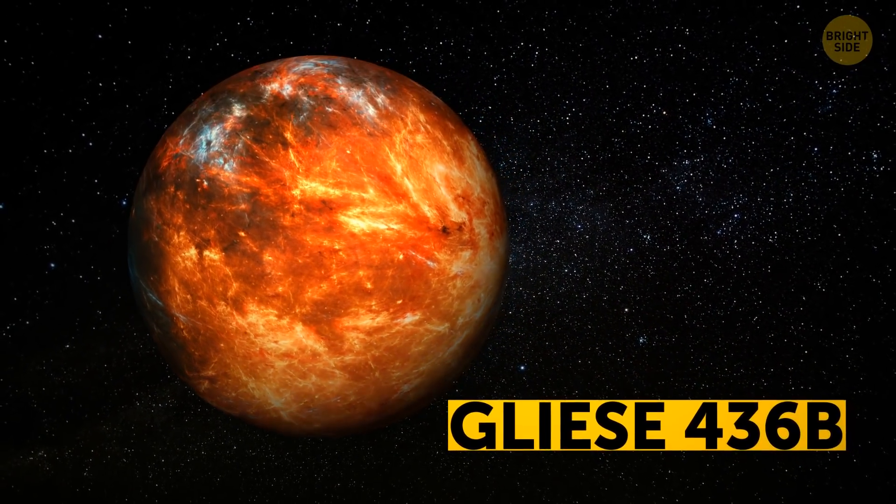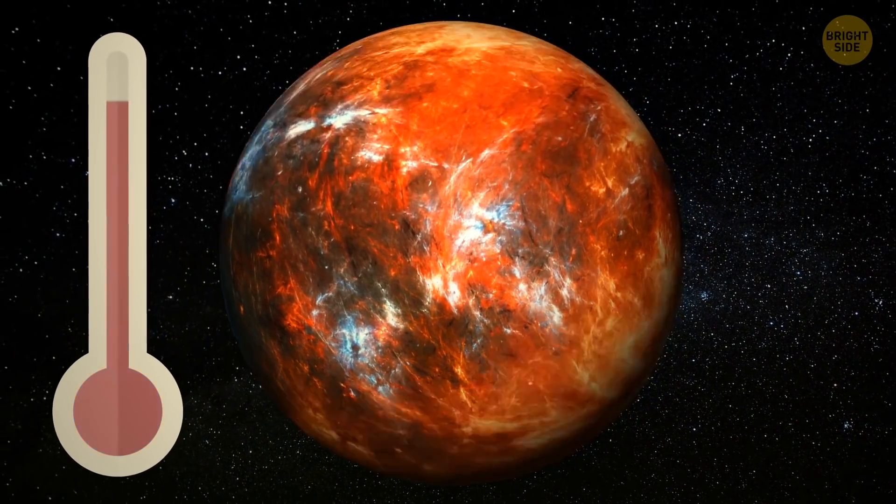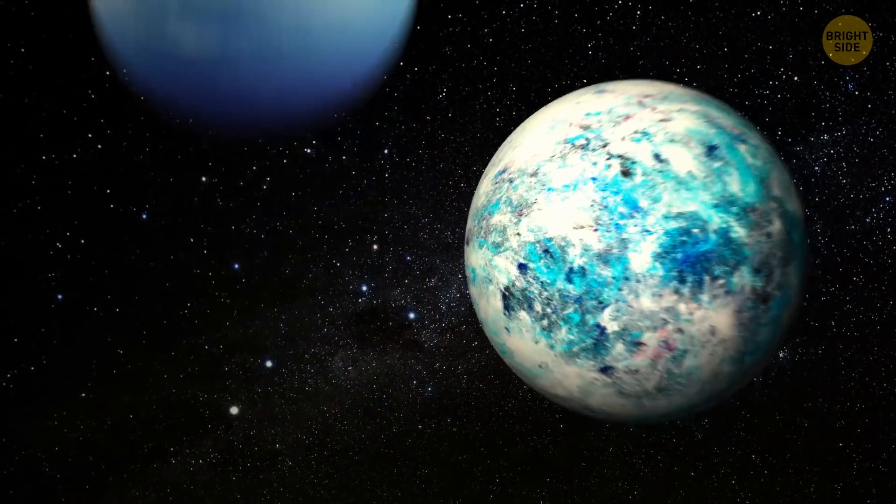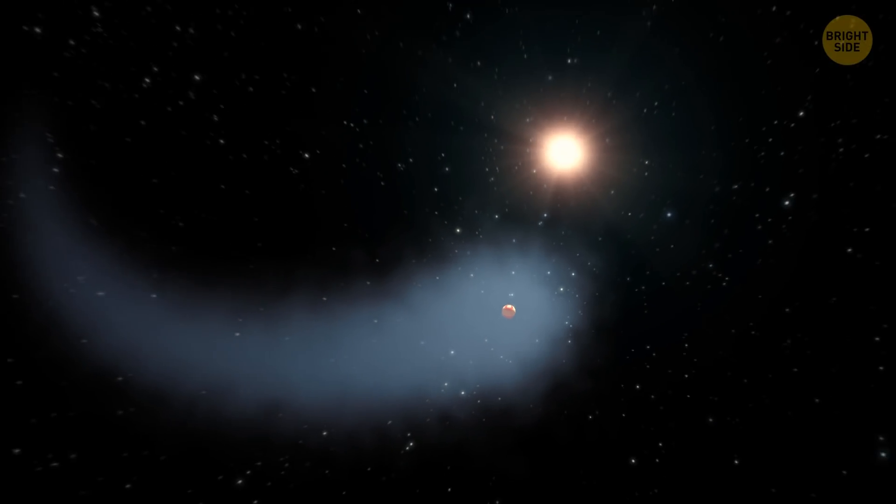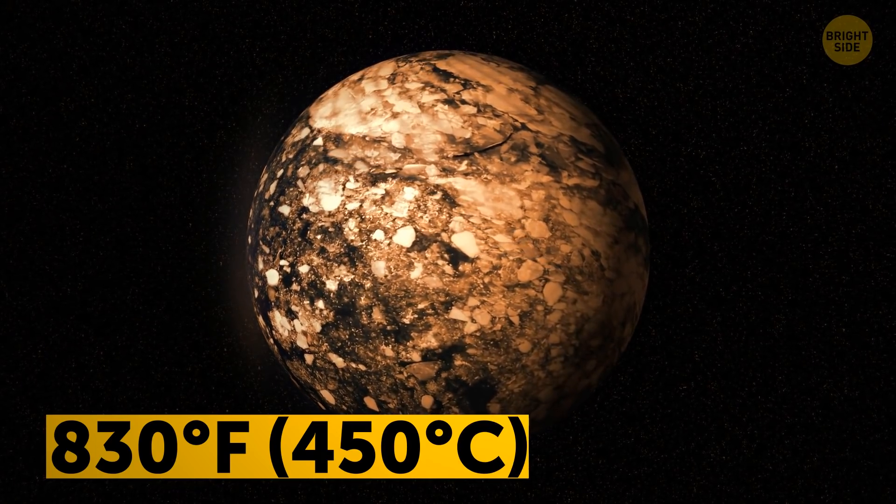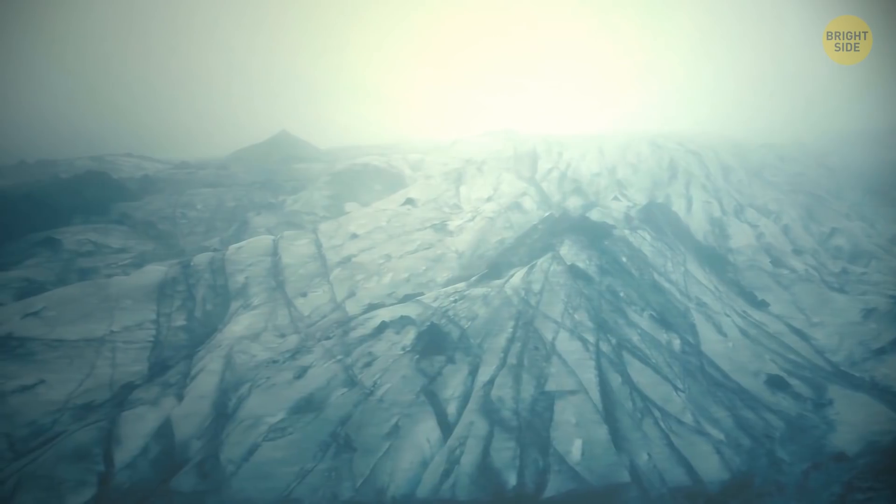Gliese 436b is one of the strangest planets out there. It's extremely hot, yet made of ice. This is a Neptune-sized planet that needs just a little bit more than two days to finish a full orbit around its parent star. It's assumed its surface has a temperature that goes up to 830 degrees, but the ice still doesn't melt since the planet has enormous gravity.